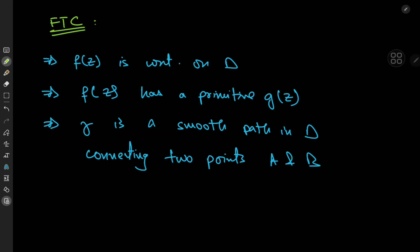Now that we know what an antiderivative is, we can state the fundamental theorem of calculus. You need a function f that's continuous on some domain d, and f has a primitive g(z). We take gamma, a smooth path in the domain connecting any two points a and b.